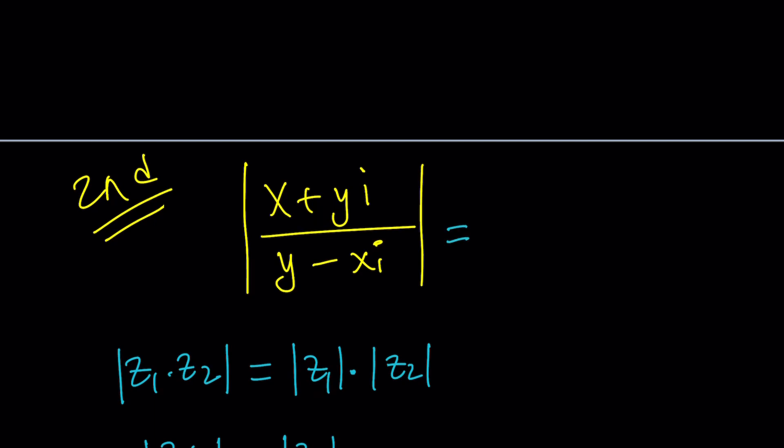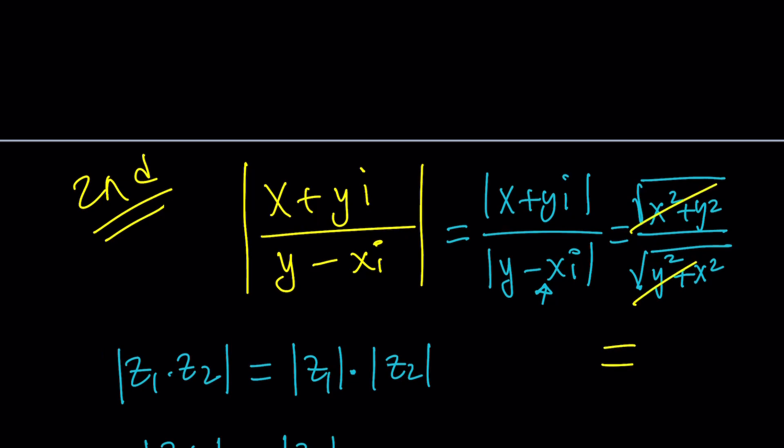So here, what I'm going to do is separate this into a quotient of absolute values. So I'm going to write it as the absolute value of x plus yi divided by the absolute value of y minus xi. We're allowed to do this by properties. And what is the absolute value of x plus yi? It is the square root of x squared plus y squared. The absolute value of y minus xi is the square root of y squared plus x squared, because you can have a negative x, but it's always going to be squared. These two are the same. So they cancel out, leaving us with 1, which is the absolute value, which is the answer, which is what we found with the first method.